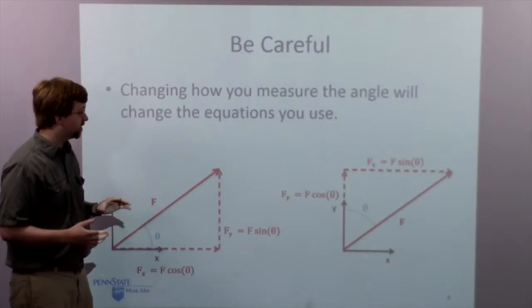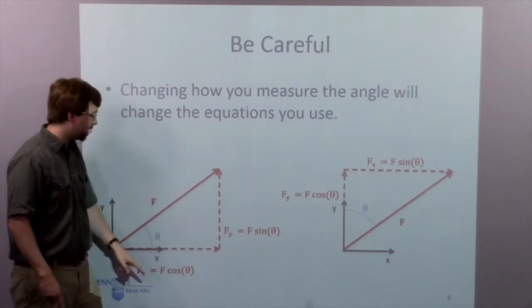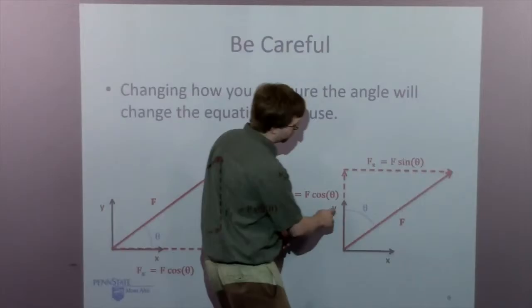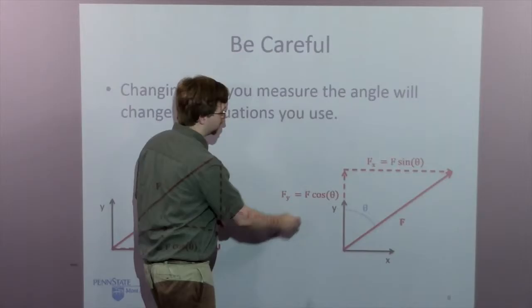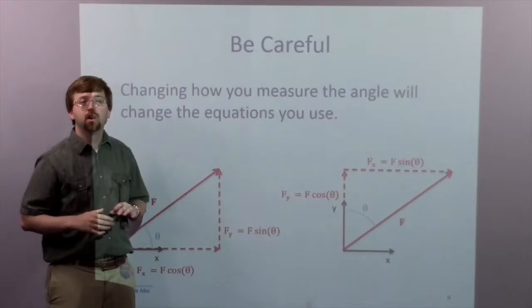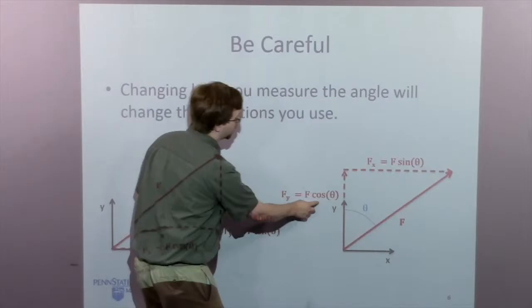I always want to set up a right triangle, but I can measure the angle either from horizontal or from vertical. If I measure from horizontal, the x-component is F cosine theta and the y-component is F sine theta. But if I measure my angle down from vertical and set up the triangle differently, then the x-component is sine theta and the y-component is cosine theta. The thing that stays consistent is that cosine theta always corresponds to the adjacent side — the one touching the angle — and sine theta is the opposite side.